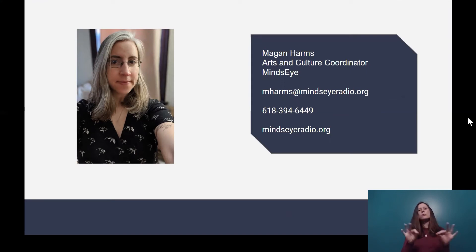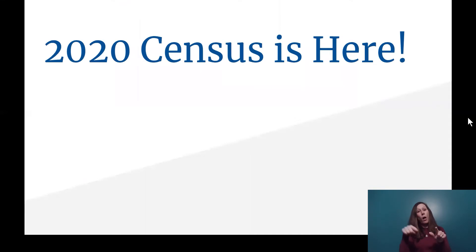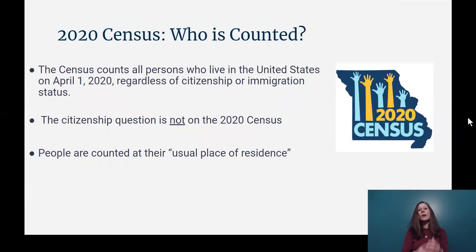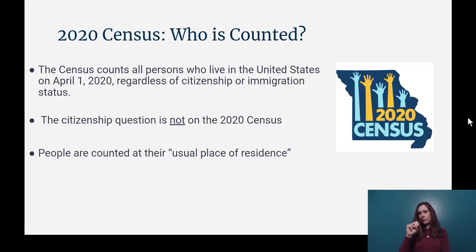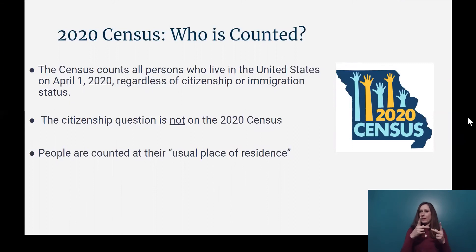I want to quickly touch on an important topic that is extremely relevant right now, particularly with isolated communities, and that is the census. As you all should probably know by now, the 2020 census is here. The most important question is who is counted, and the simple answer is everyone. The census counts all persons who live in the United States on April 1, 2020, regardless of citizenship or immigration status. The citizenship question is not on the 2020 census, and people are counted in their usual place of residence.